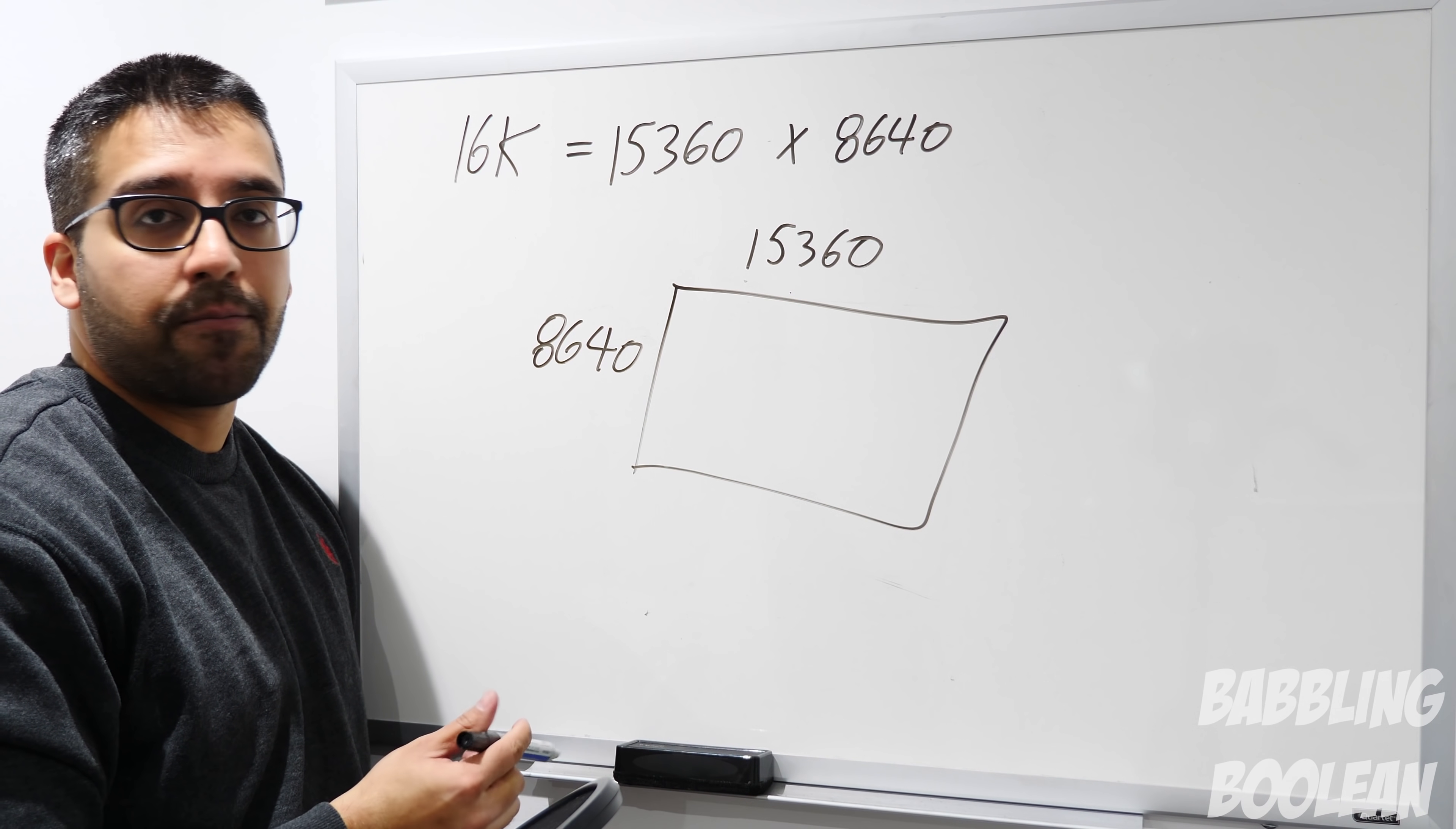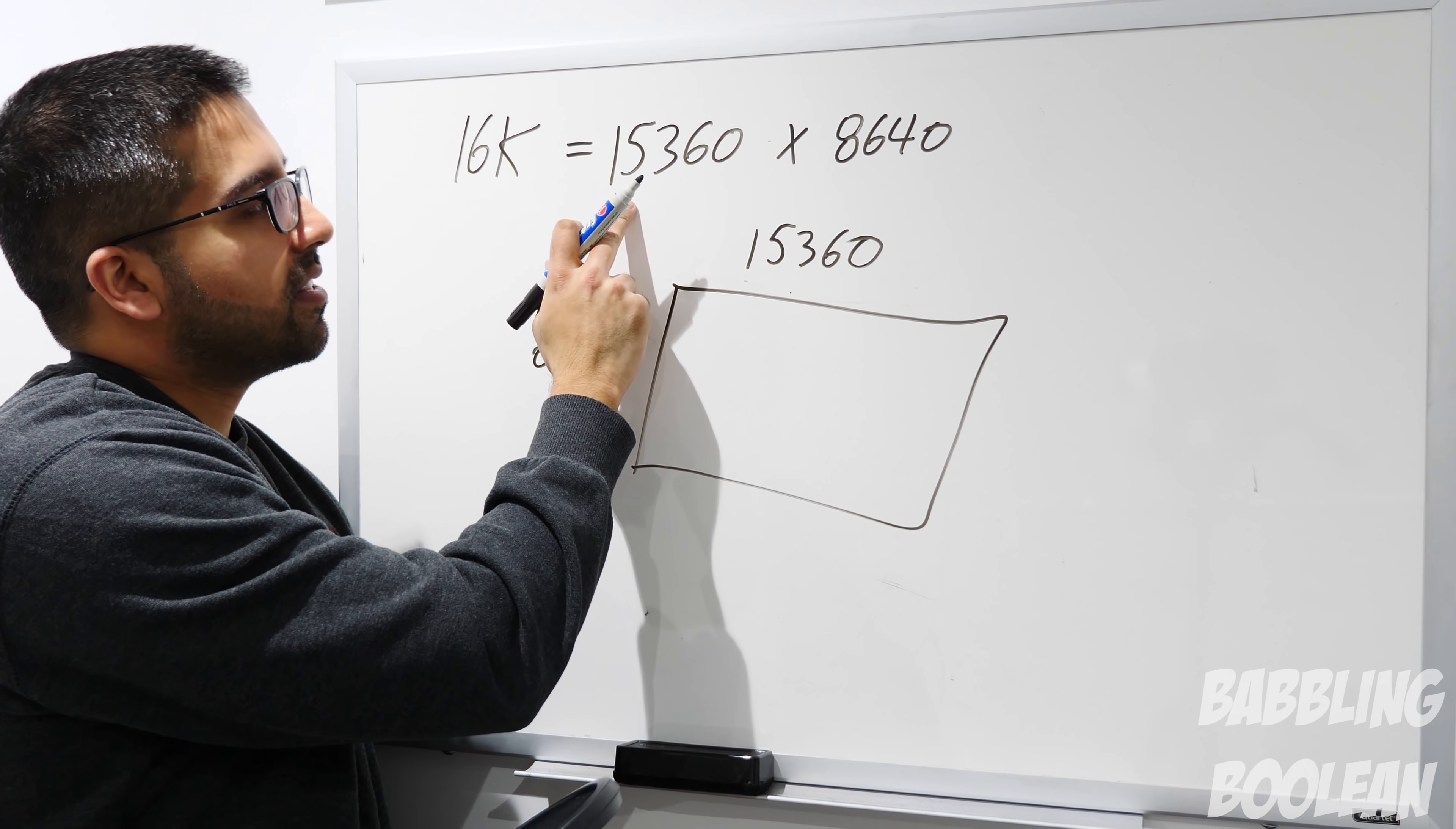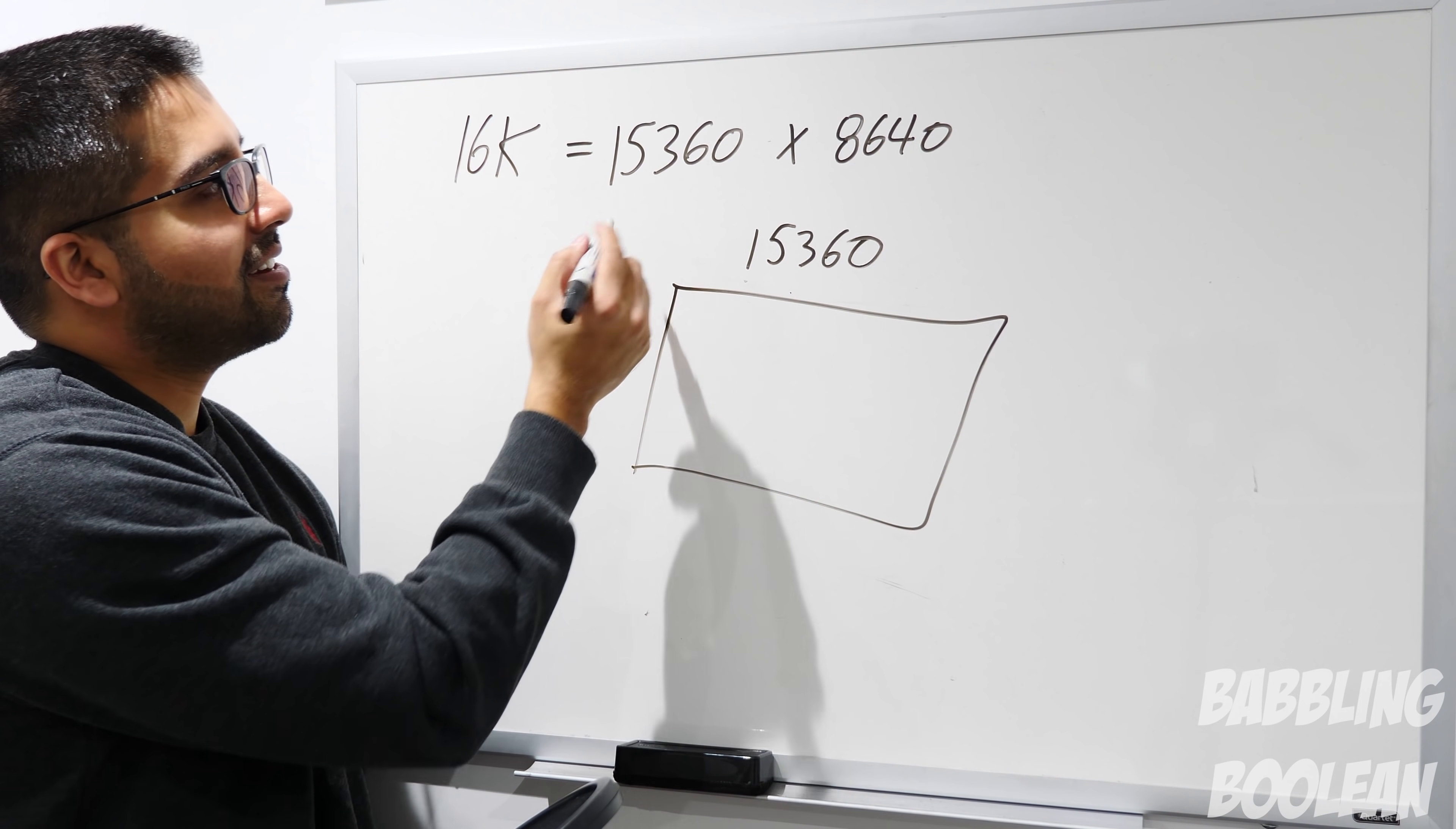But 16K, similar situation. 15000, we're in the double digits of 10000, 15360 by 8640. Same concept here, same concept here. Again, you'll notice it's not 16000 pixels. More marketing garbage.